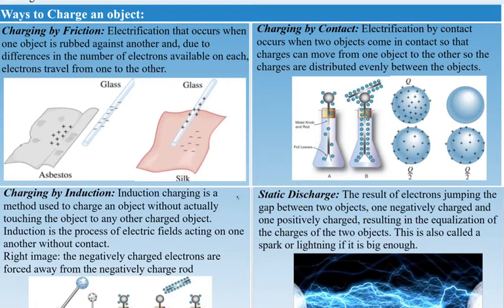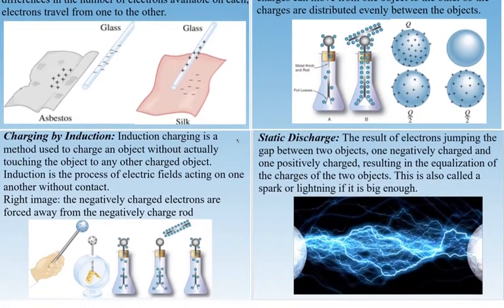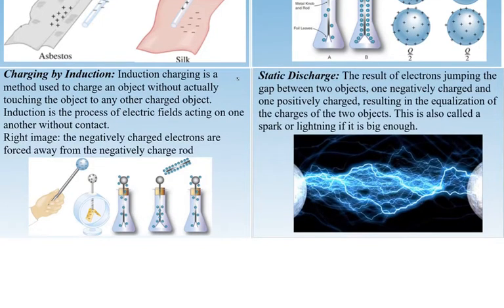Another way to charge materials is by contact. Electrification by contact occurs when two objects come into contact so charges can move from one to another. When charges are evenly distributed, the objects reach equilibrium. One object must already be charged, and they distribute the charge between them.